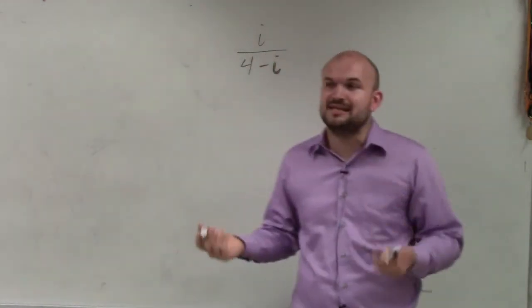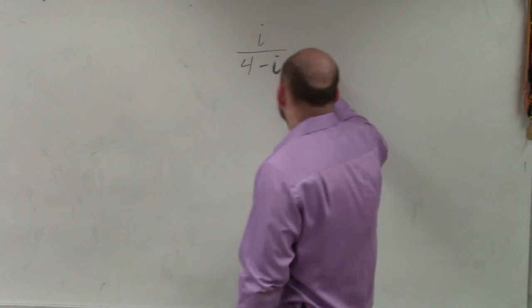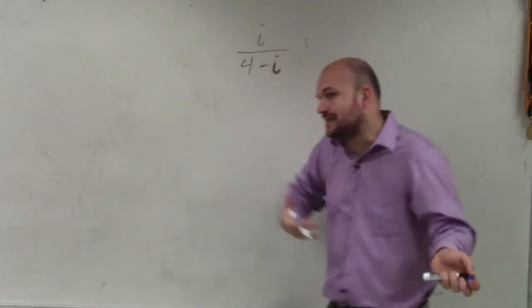the most common thing when students see the i in the denominator for dividing, they automatically want to multiply by i over i, because that's what we did in the last example.